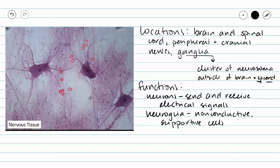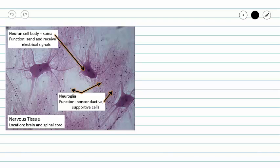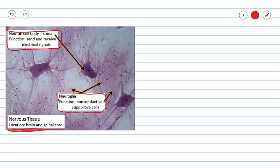So for right now, you can learn that these cells are non-conductive and they act in support of all of the different functions of our nervous system. Here we have a nice summary slide. It emphasizes that our neurons are going to be different from our neuroglia — they have different functions. However, our location is going to be the same for our neurons and our neuroglia.